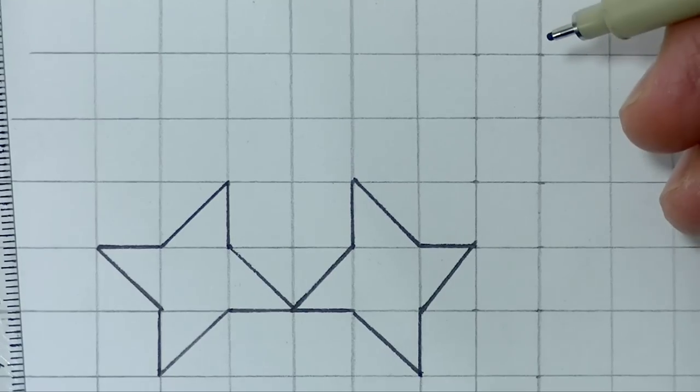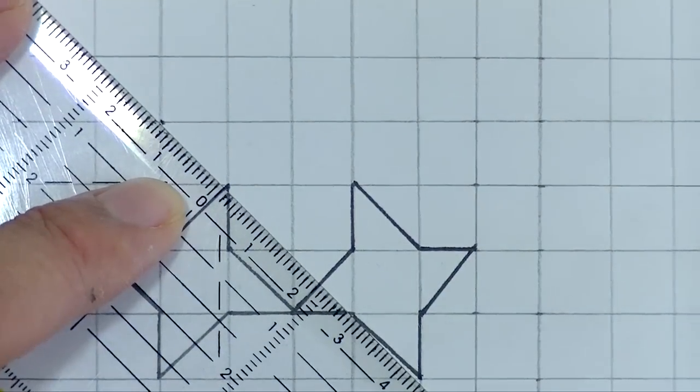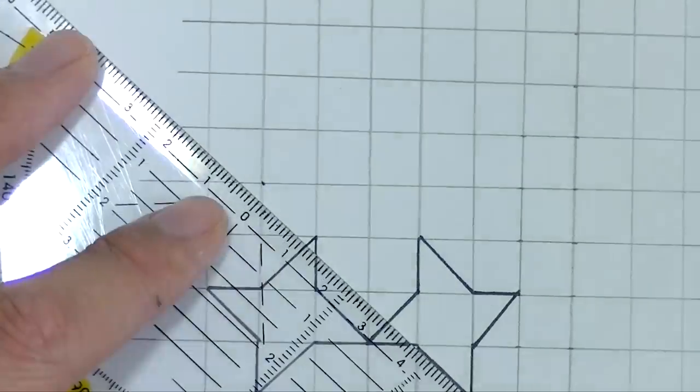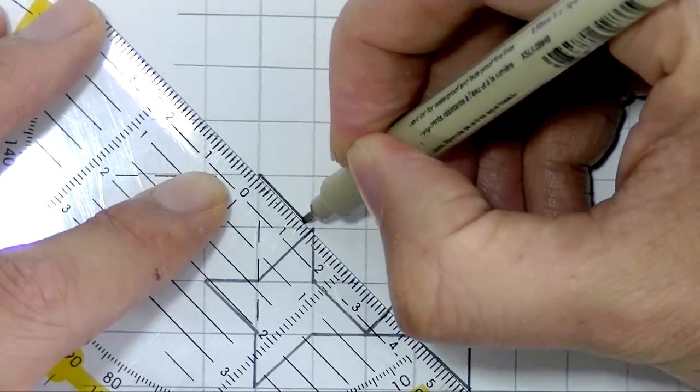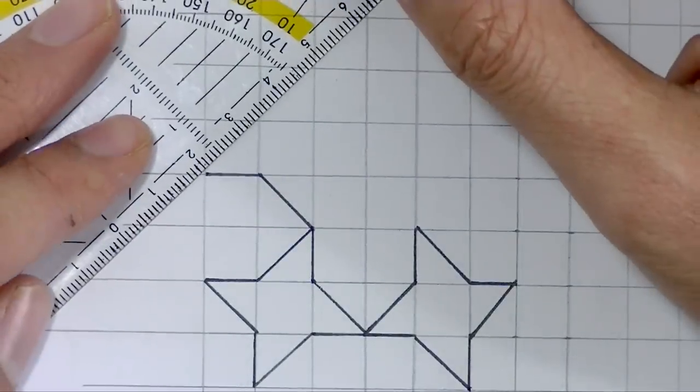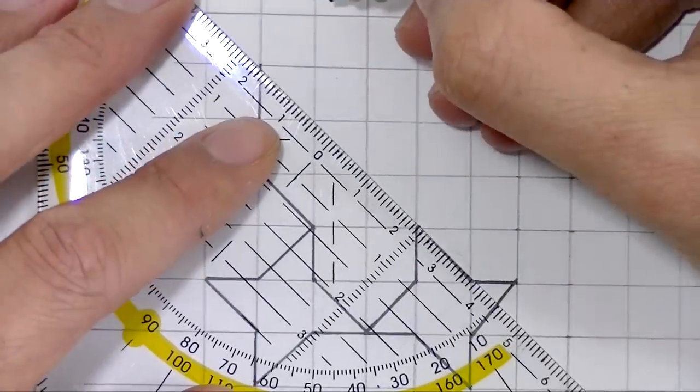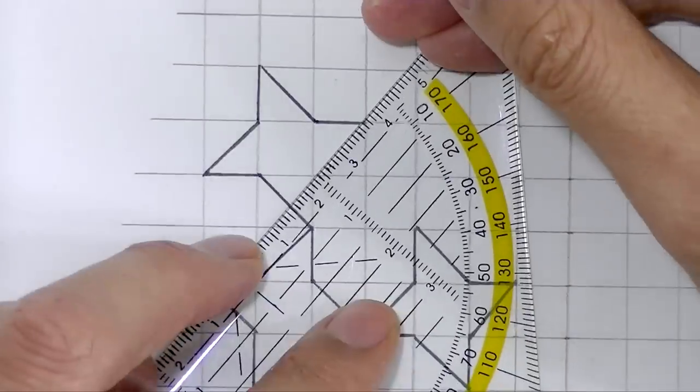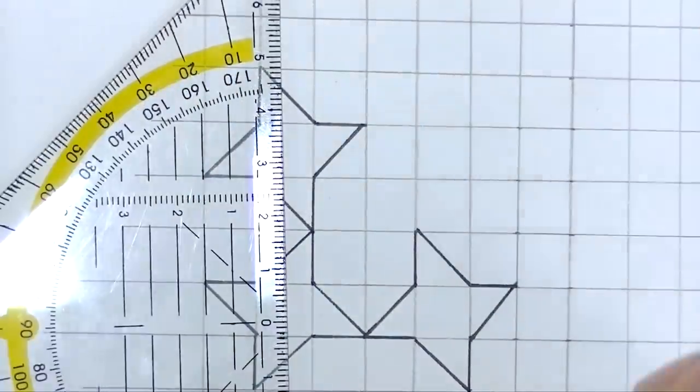Once you have done that, I'm going to mirror them again on the upper side. As you might have noticed, I'm focusing on the star, so I'm creating a pattern by focusing on the star.